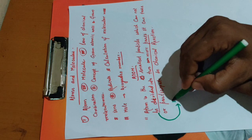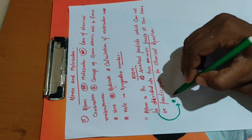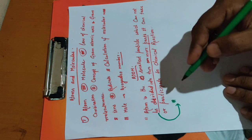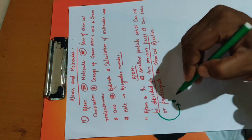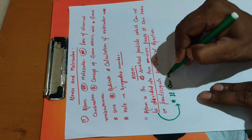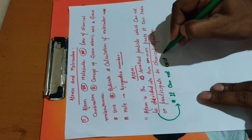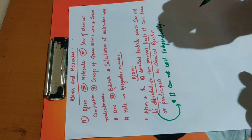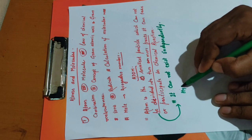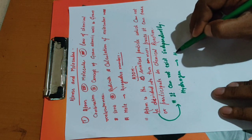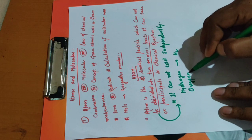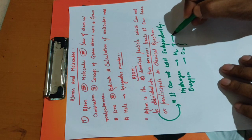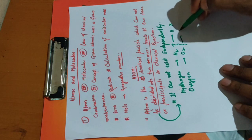Atom is the smallest particle of any matter. One important point to remember is that atom cannot exist independently. For example, if we write hydrogen H, it exists as H2 - that is, in molecular form. A single H will not exist independently, and similarly O will not exist independently.